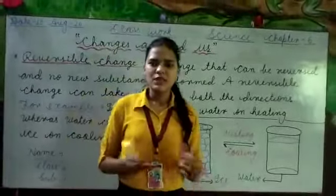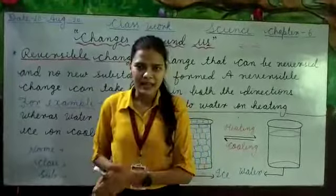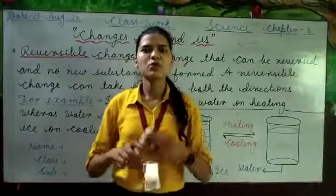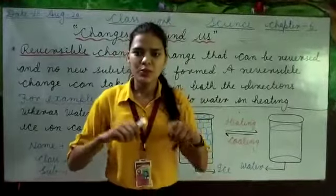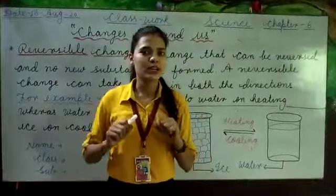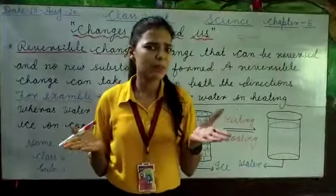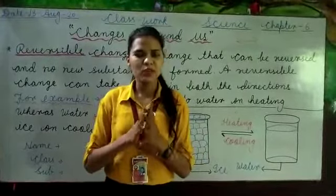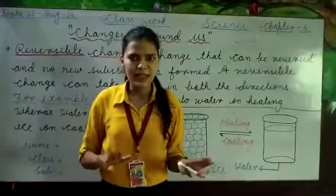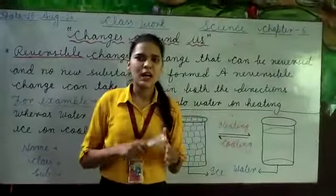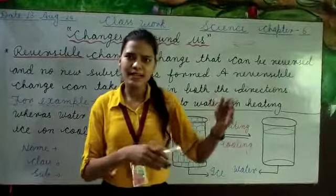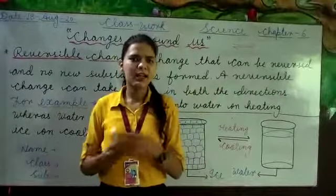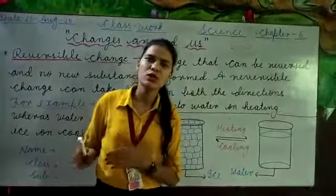Another example: when we make a roti, we have the dough. If we give it a shape and roll it, sometimes we don't get the right shape. So again we fold it and make it into a ball. If the dough is just shaped but not yet cooked on the tawa, it can be reversed. But once it is cooked, it won't be reversed. So those changes before cooking are reversible.